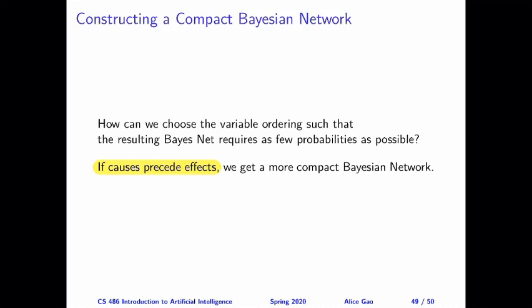That's everything for this video. Let me summarize. After watching this video, you should be able to: describe what it means for a Bayesian network to correctly represent a joint probability distribution; construct a Bayesian network based on a probability distribution and an ordering of the variables; and explain a heuristic we can use to construct a smaller, more compact Bayesian network. Thank you very much for watching. I will see you in the next video. Bye for now.